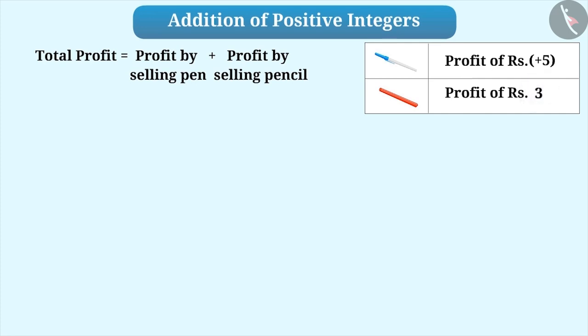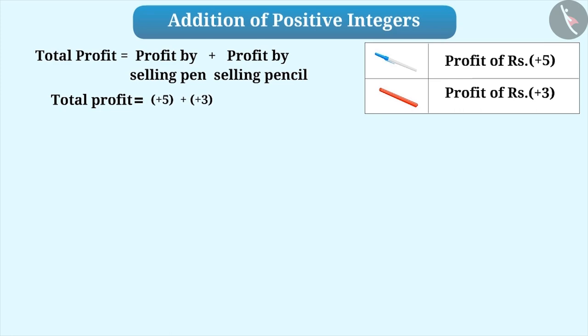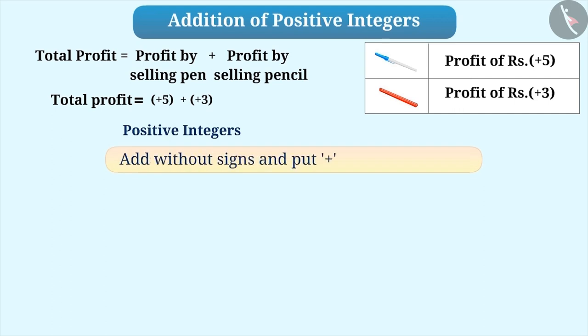We have learnt from the earlier videos of integers that profit of Rs.5 is expressed as +5. Similarly, profit of Rs.3 is expressed as +3. By doing so, the total profit is +5 + +3. As you can see, both are positive integers. For addition of any two positive integers, we add them without signs and then prefix it with a plus sign.